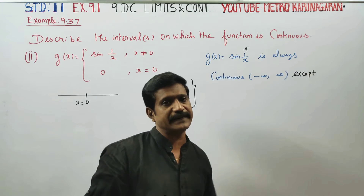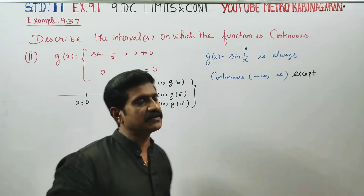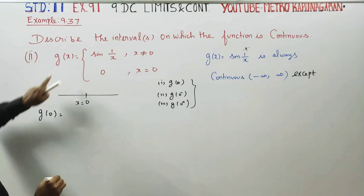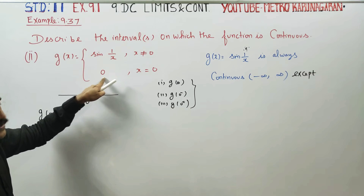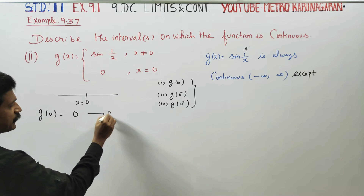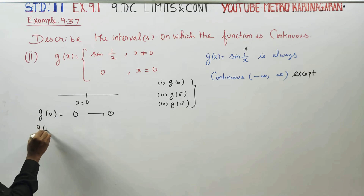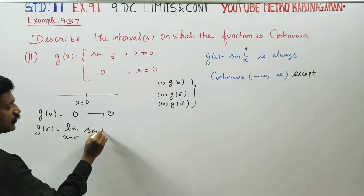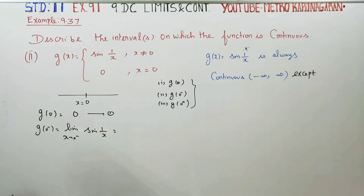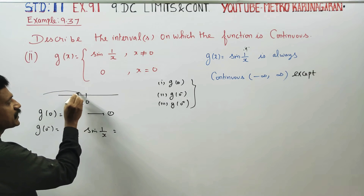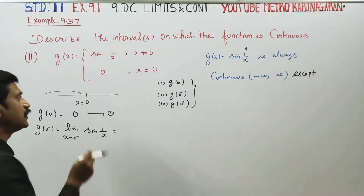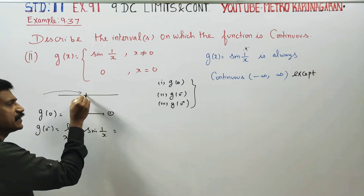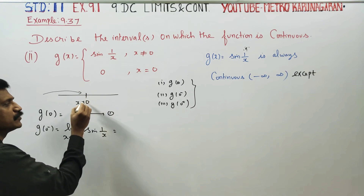It is continuous at 0 only if those three conditions are equal. First of all, g(0): since x equals 0 falls in the second piece of the definition, g(0) equals the defined value at x equals 0. When you compute and check, you will see all three conditions.